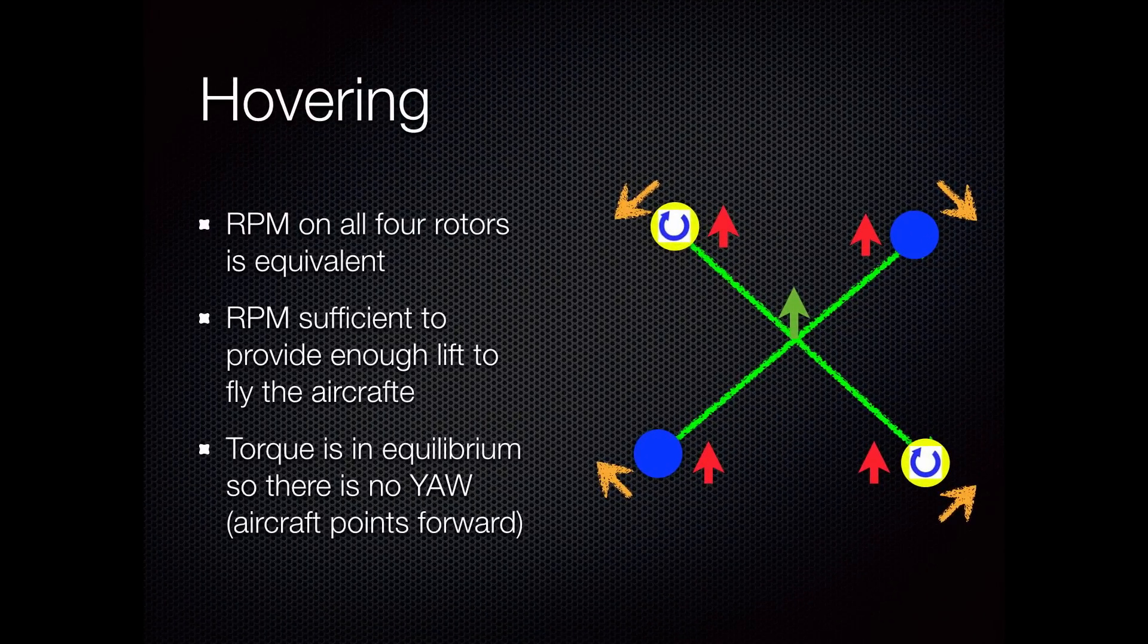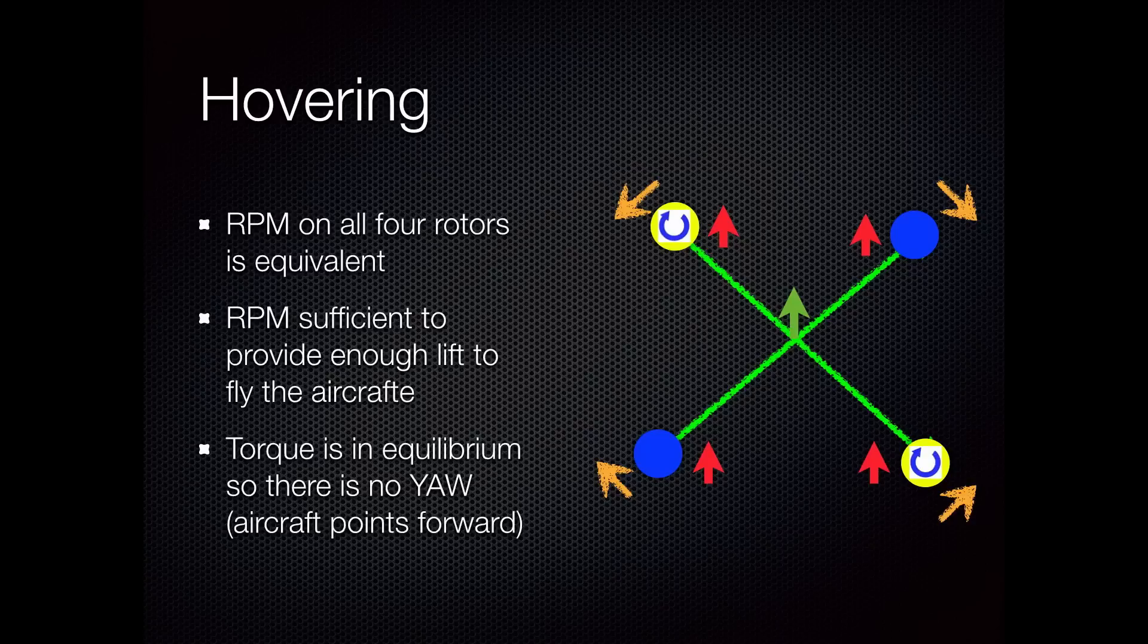In order for the quad rotor to hover, all of these forces must be perfectly in balance. The thrust must be sufficient to lift the quad rotor off the ground, but not so much that it causes it to continue climbing. The torque, represented by the yellow arrows, cancels out so it doesn't pivot or yaw. All four of the RPMs are consistent or roughly equivalent, so you don't get any pitch or roll action. Everything is in equilibrium, and that way the quad rotor hovers.